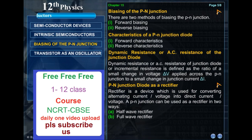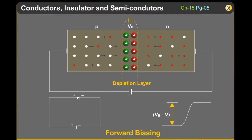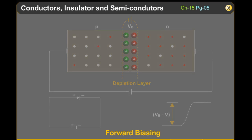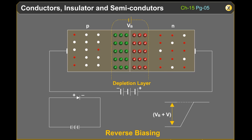Biasing of the P-N junction. Forward biasing: in forward biasing, the applied voltage V mostly drops across the depletion region, and the voltage drop across the P-side and N-side of the P-N junction is negligibly small. The resistance of the depletion region is very high as it has no free charge carriers. In forward biasing, the forward voltage opposes the potential barrier VB. Therefore, the potential barrier height is reduced and the width of the depletion layer decreases. The effective height of the potential barrier in forward biasing is VB minus V.